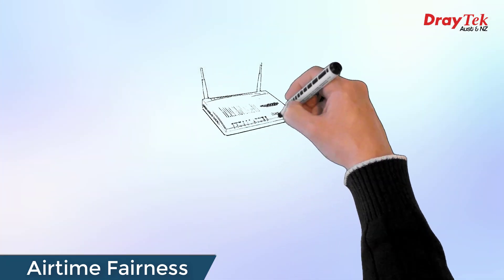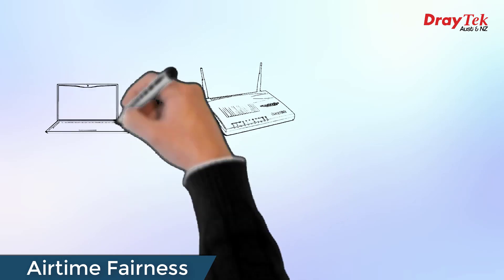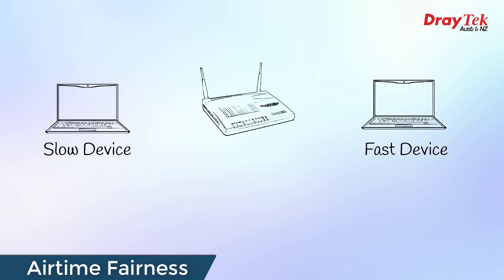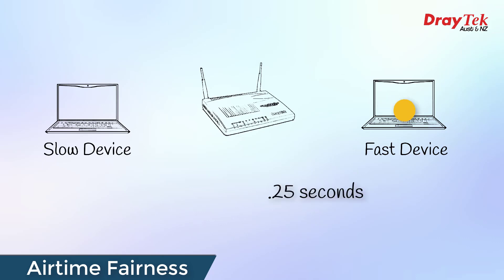Let's assume for example that we have a network with a slow wireless device and a fast one. Each device gets an equal share of the bandwidth. The slow wireless client takes one second to download one packet of data. If the fast client is also only allowed to download one packet during its turn, it can download the same packet in a quarter of the time, but its overall speed will be impacted because it continually has to wait on the slower device.